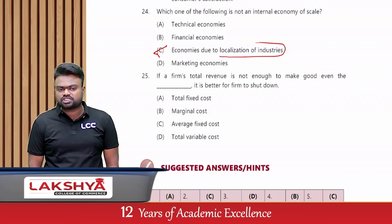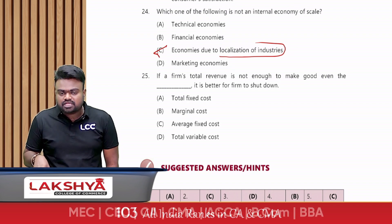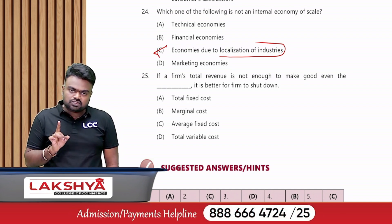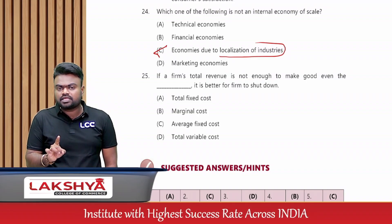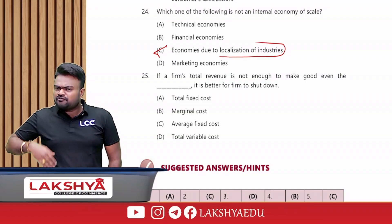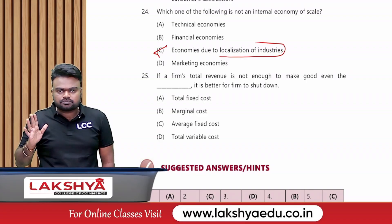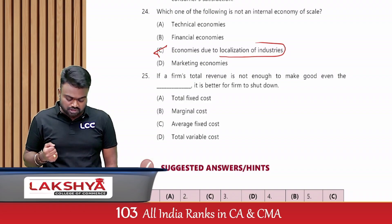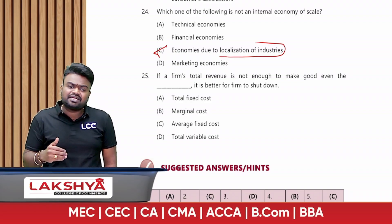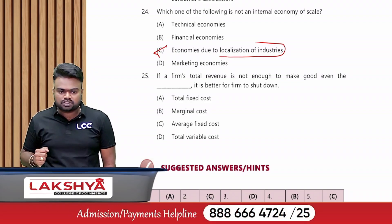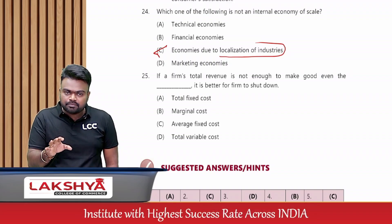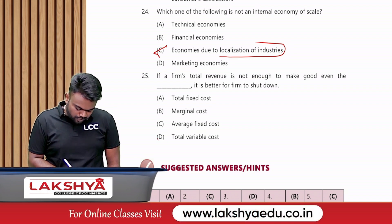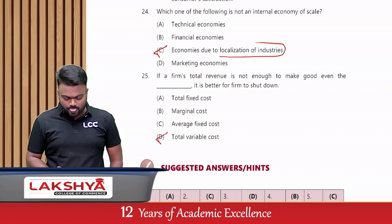If a firm's total revenue is not enough to cover even the blank, it is better to shut down. In business, there are two types of cost to recover: variable cost and fixed cost. Fixed cost is incurred regardless, but variable cost arises from selling products. First try to recover the entire variable cost, then focus on fixed cost. If you cannot recover variable cost, it is better to shut down. The answer is total variable cost.